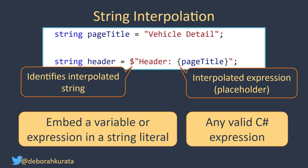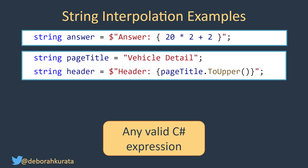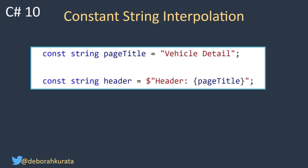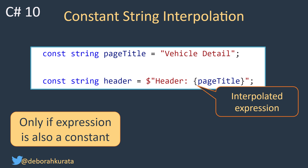The expression can be any valid C# expression. Here are some examples — we can include a calculation, reference a property and call its method, or call our own custom method. Any valid C# expression can be inserted within the curly braces. In C# 10, we can define an interpolated string as a constant, but only if the interpolated expression is also a constant, like in this example.